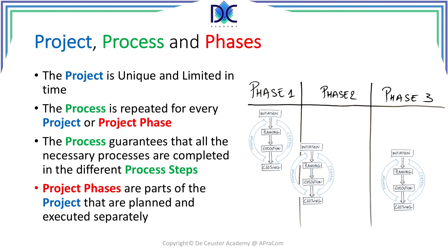For phase one we have the process. Phase two in this case is overlapping with phase one, so the moment we start with phase two we start again with the project management process, and for the last phase we do exactly the same. It is important to make a distinction between the process steps and the project phases, as a process step and a project phase are different things.